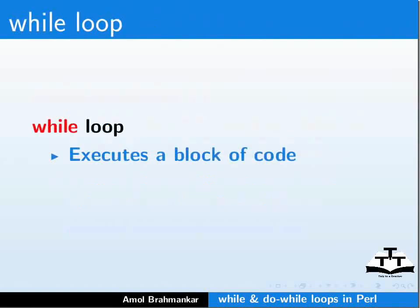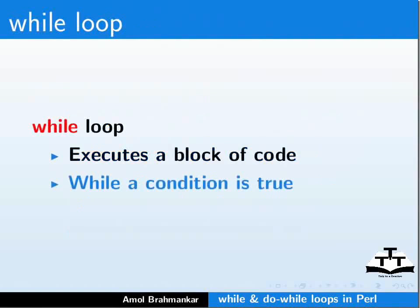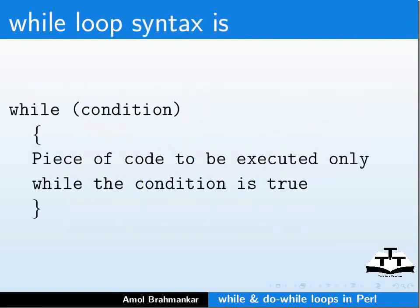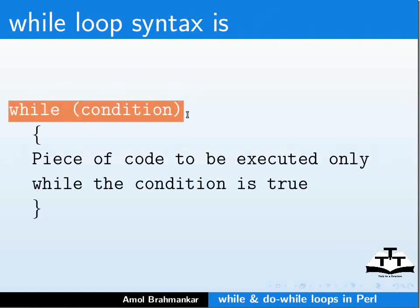The while loop executes a block of code while a condition is true. The syntax of while loop is: while (condition) { piece of code to be executed while the condition is true }. If the condition is not satisfied, the while loop will exit without executing the code even once.